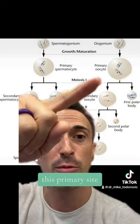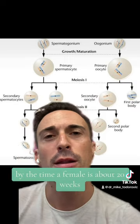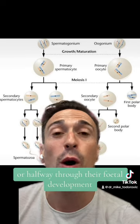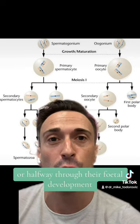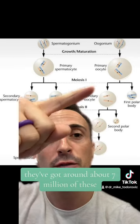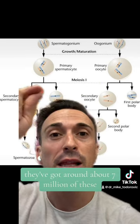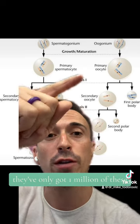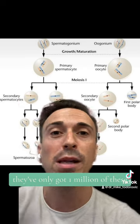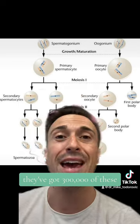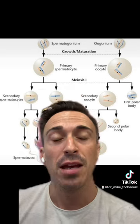Here's the thing: this primary oocyte — by the time a female is about 20 weeks, or halfway through their fetal development, they've got around 7 million of these. By the time they're born they've only got one million, and then by the time they hit puberty they've got 300,000.